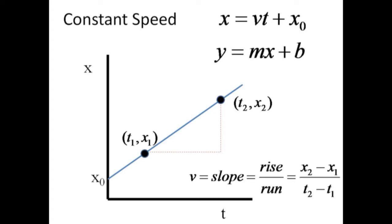At constant speed, the position of an object, x, is given by speed times time plus the starting position, x0. This is an example of a linear relationship where x changes linearly with time.